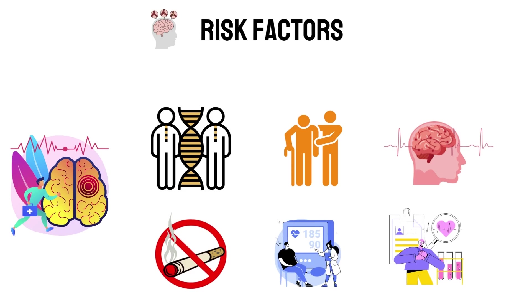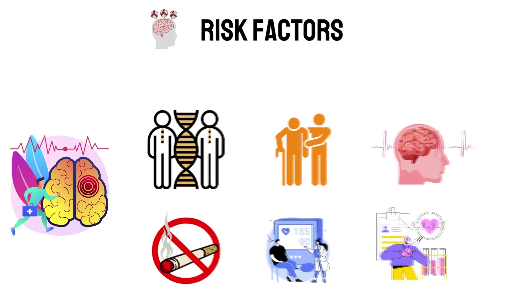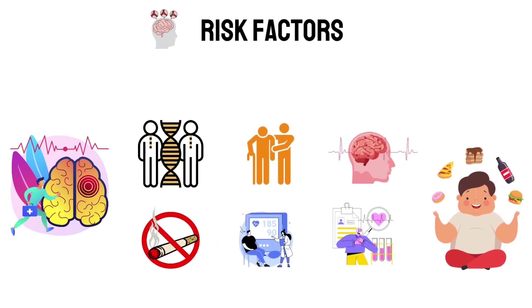Additional risk conditions include diabetes, peripheral artery disease, or untreated atrial fibrillation — a condition in which your heart beats in an irregular pattern. If you are overweight or obese, or eat a lot of food high in saturated fat or salt, your risk for stroke goes up.